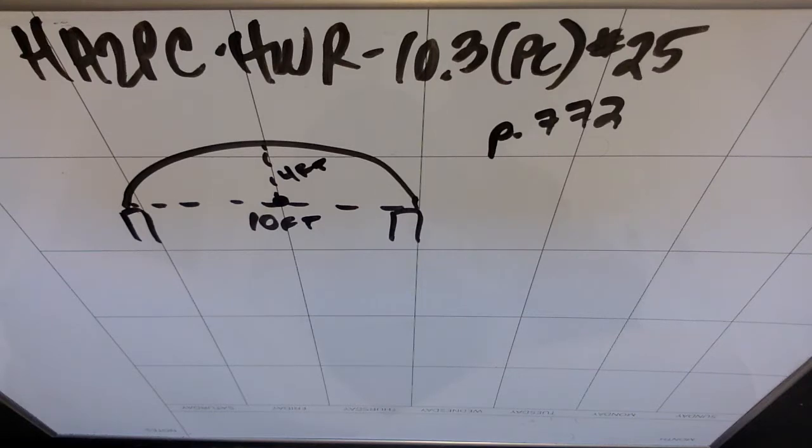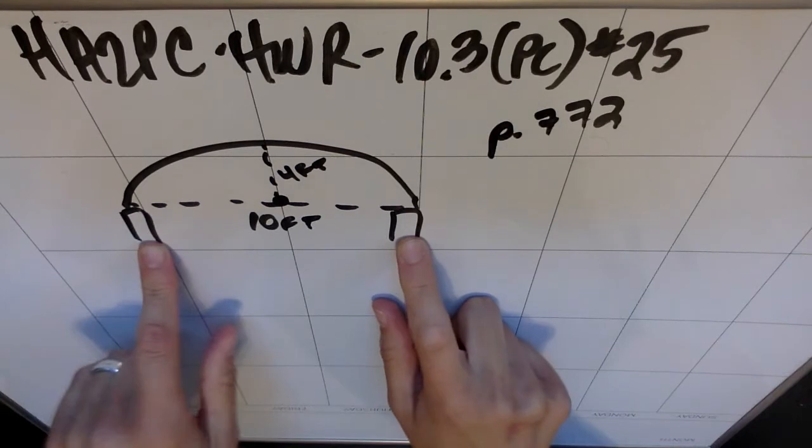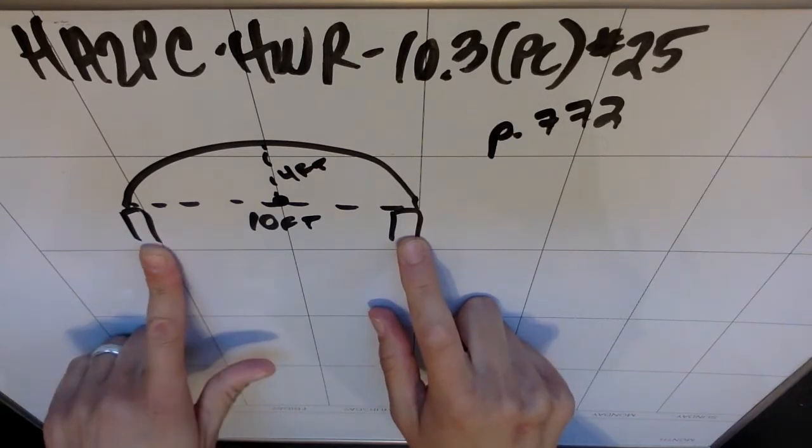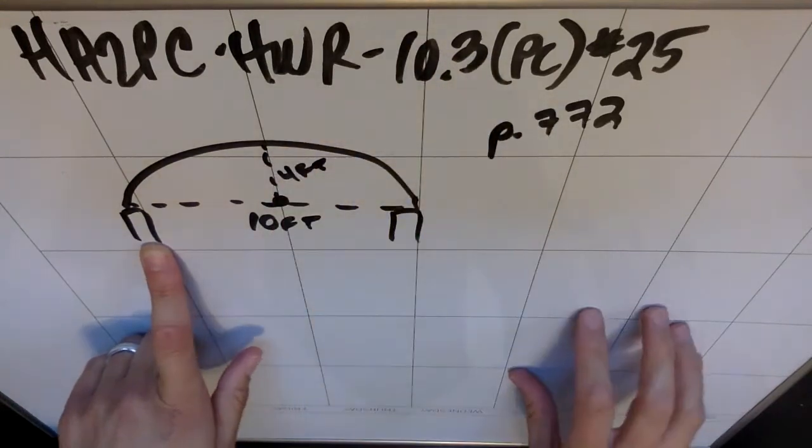A semi-elliptical archway is set atop pillars that are 10 feet apart. So these pillars are 10 feet apart. Its height atop the pillars, meaning just the part above the pillars, is 4 feet.